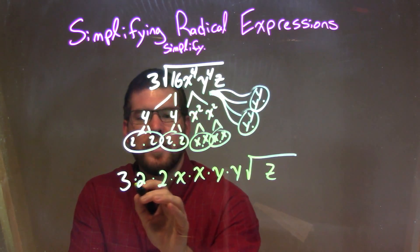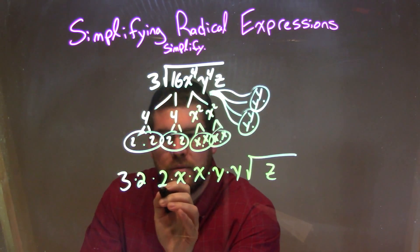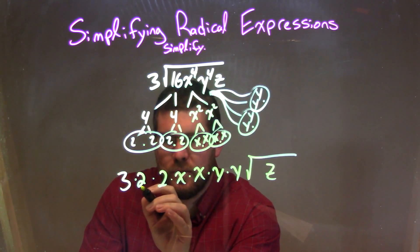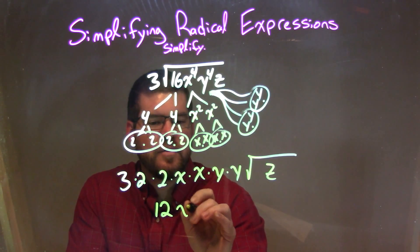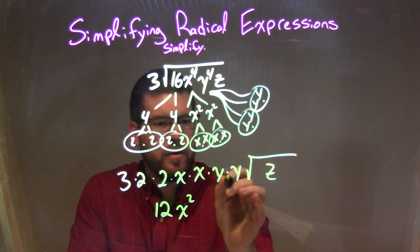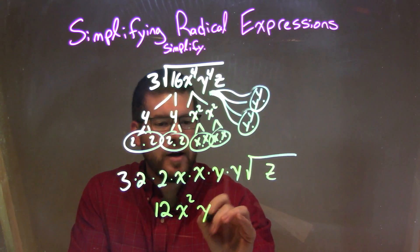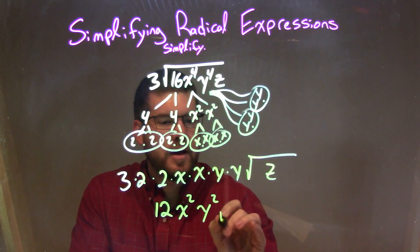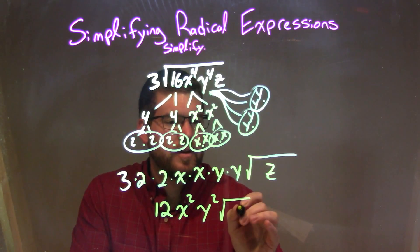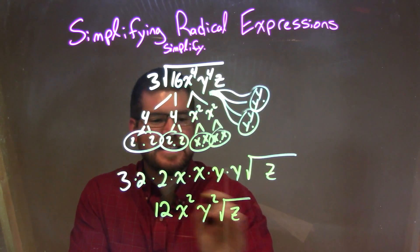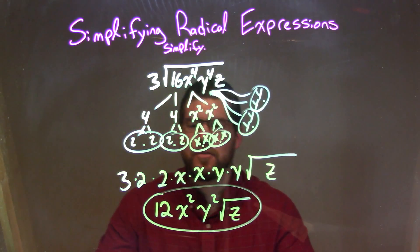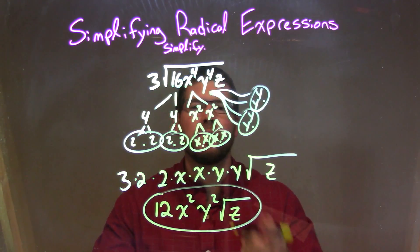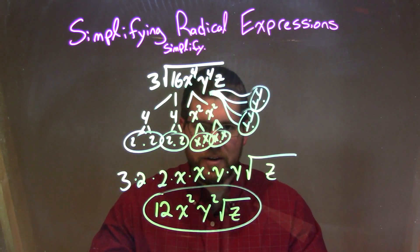So now let's simplify. 3 times 2 times 2: 3 times 2 is 6, times 2 is 12. So we have 12. x times x is x squared. y times y is y squared. Times the square root of what's left inside the square root, which is z. And that's our final answer: 12x squared y squared times the square root of z.